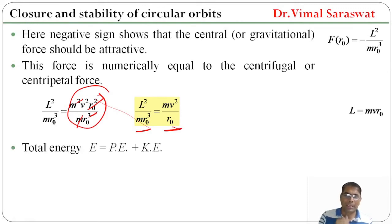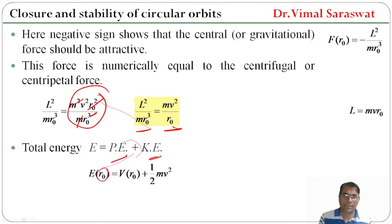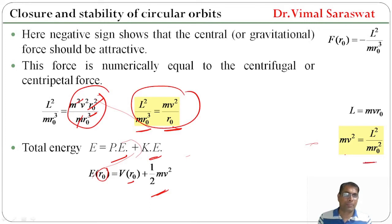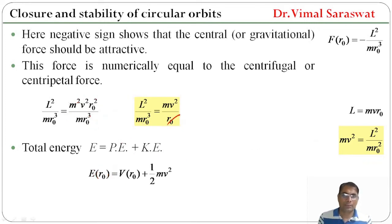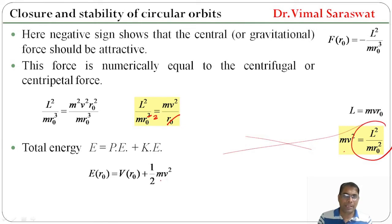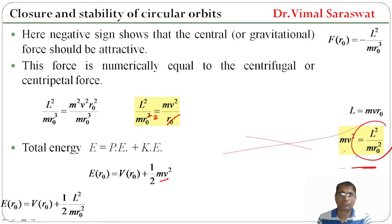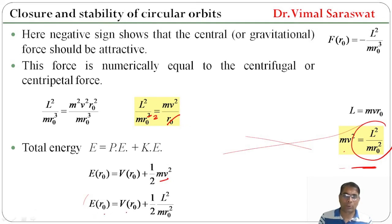Total energy is potential energy plus kinetic energy. So total energy at r₀ is E(r₀) = V(r₀) + ½mv². Since mv² = l²/(mr₀²), we replace mv² accordingly. Therefore E(r₀) = V(r₀) + ½ · l²/(mr₀²), giving E(r₀) = V(r₀) + l²/(2mr₀²).